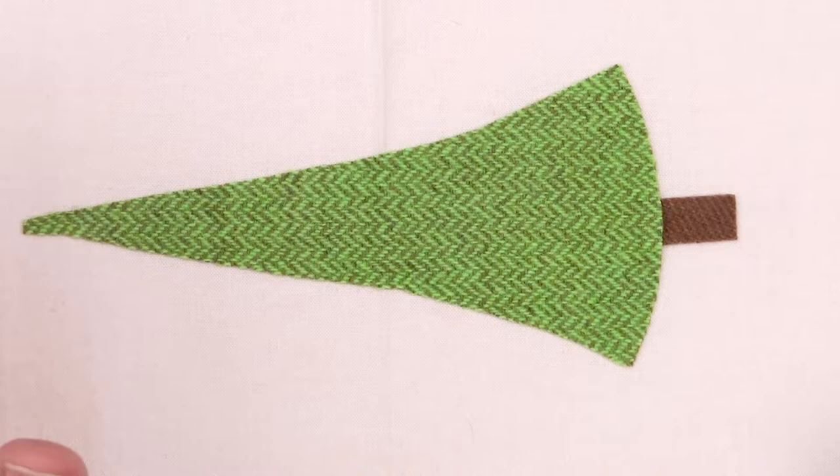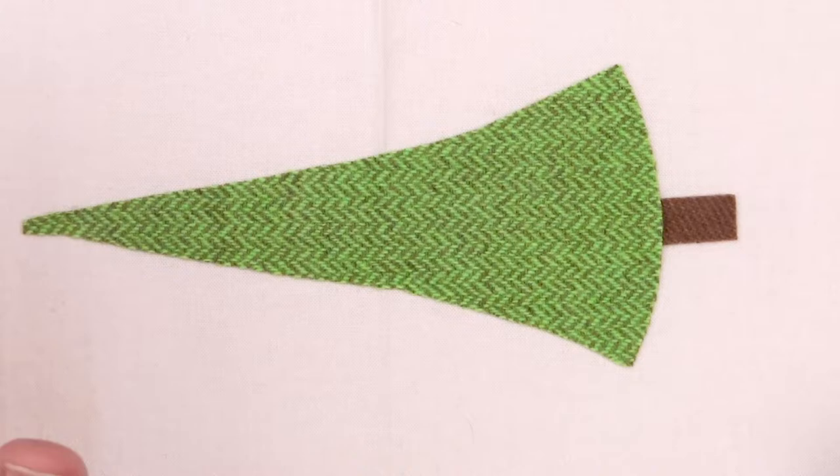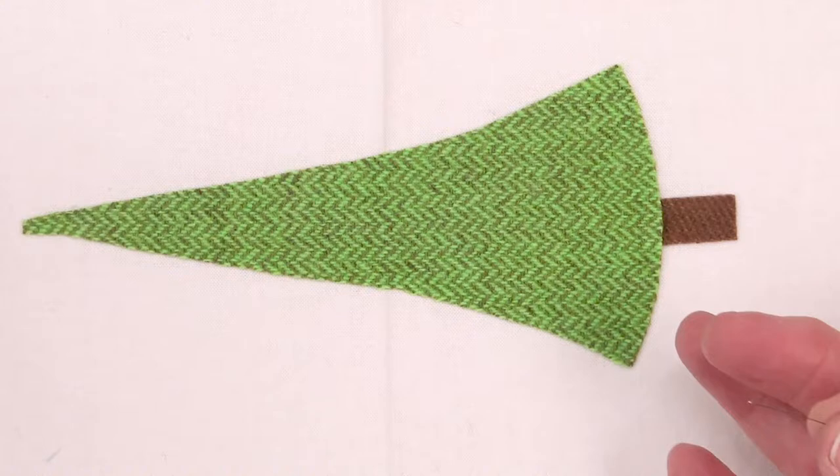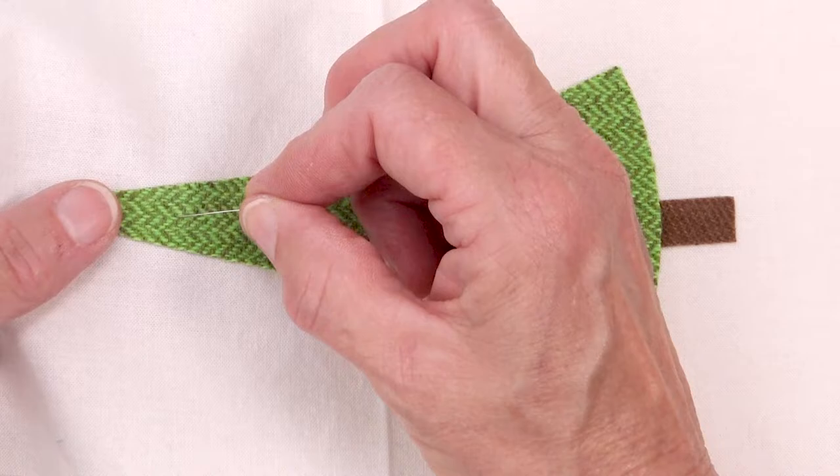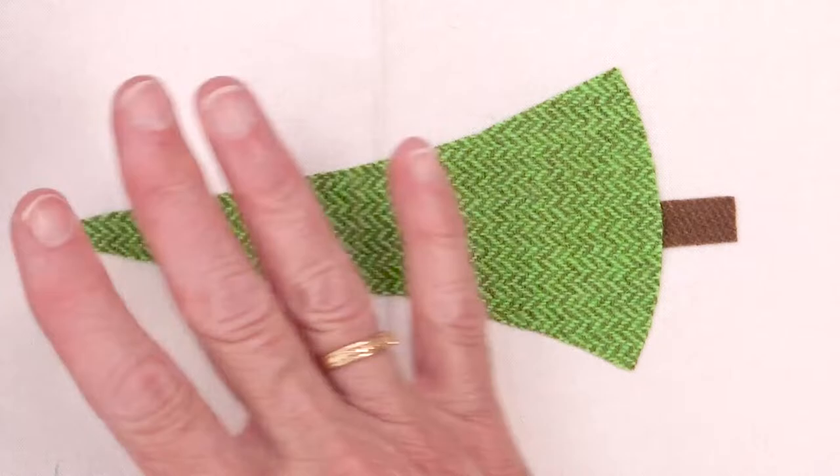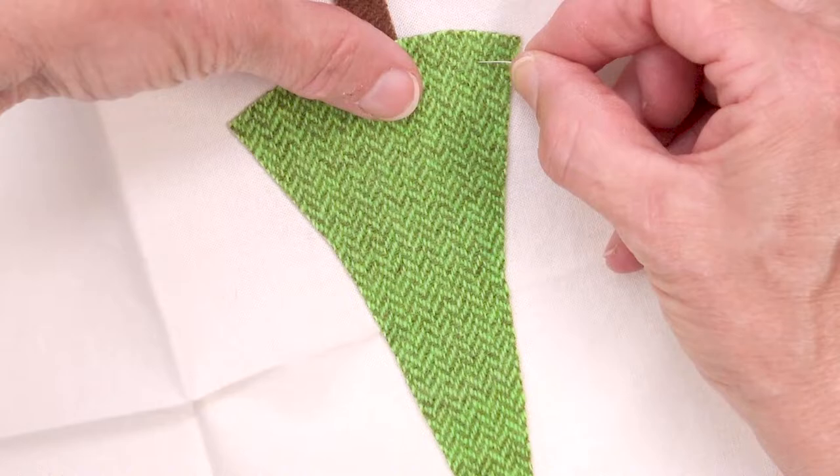Once you have your needle threaded and before you start sewing you might want to add a pin or two or three just to make sure the shape stays in place. You can use other pins but I really like Karen K. Buckley's shorter perfect pins with wool because they are so fine and so flexible they don't distort the wool while you're working.